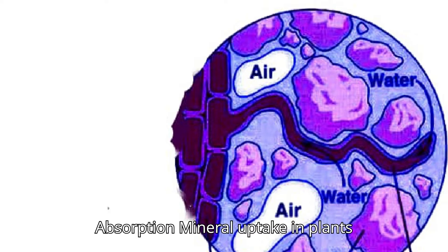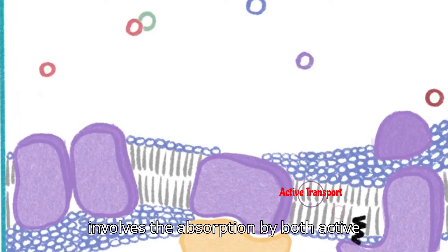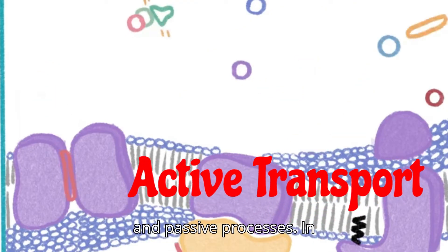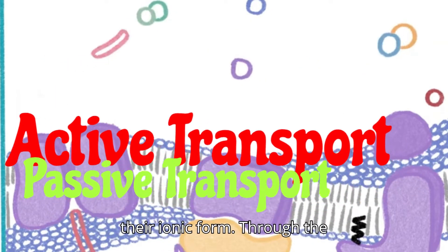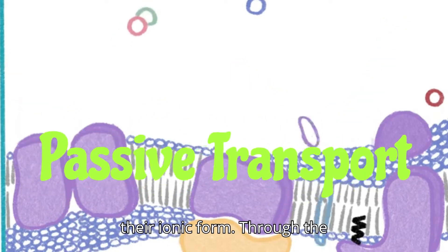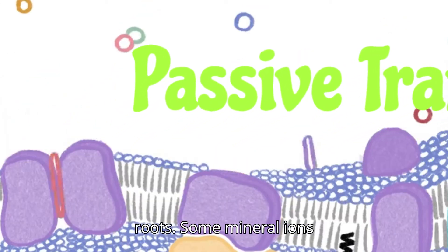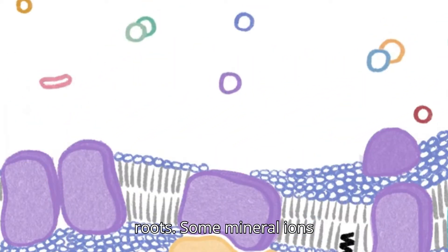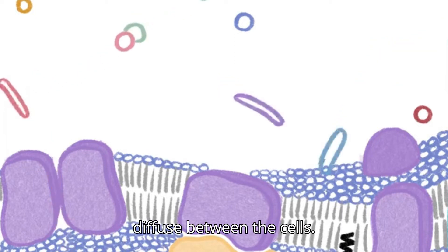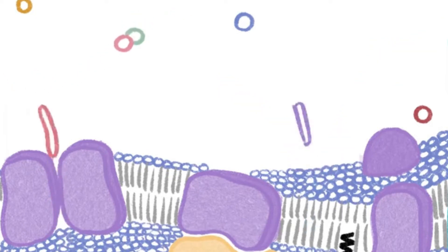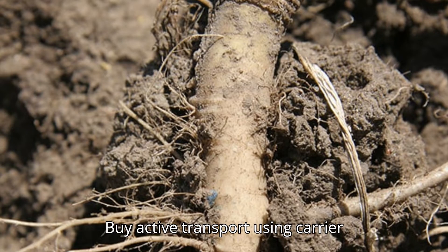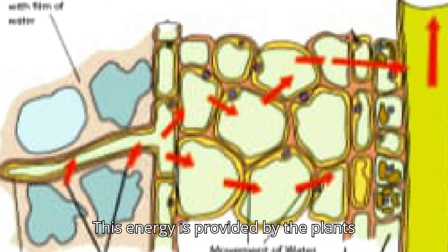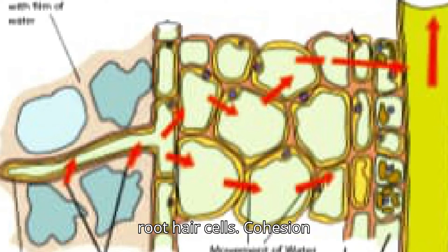Mineral uptake in plants involves absorption by both active and passive processes. In their ionic form, through the roots, some mineral ions diffuse between the cells. By active transport using carrier proteins in the cell membranes, this energy is provided by the plant's root hair cells.